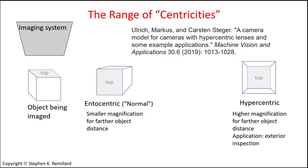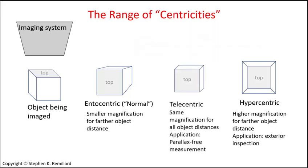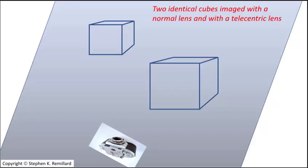When one of the pupils is located at infinity, the imaging system is telecentric. If both of the pupils are at infinity, the system is two-sided telecentric, and magnification for such an afocal imaging system depends on neither object nor image distance, resulting in images where far away objects appear just as large as nearby objects. To describe telecentric imaging, it helps to compare it to normal or entocentric imaging.